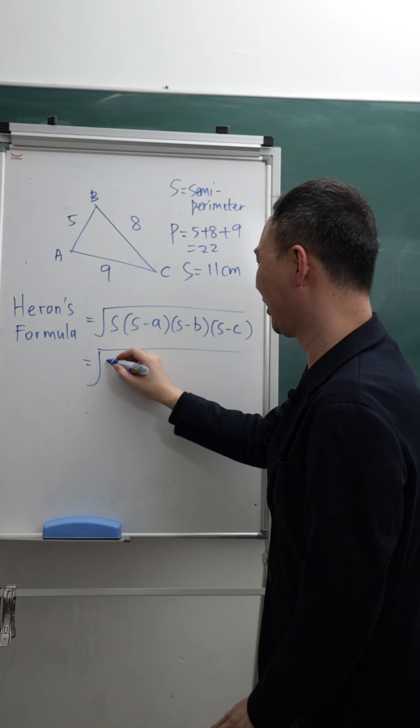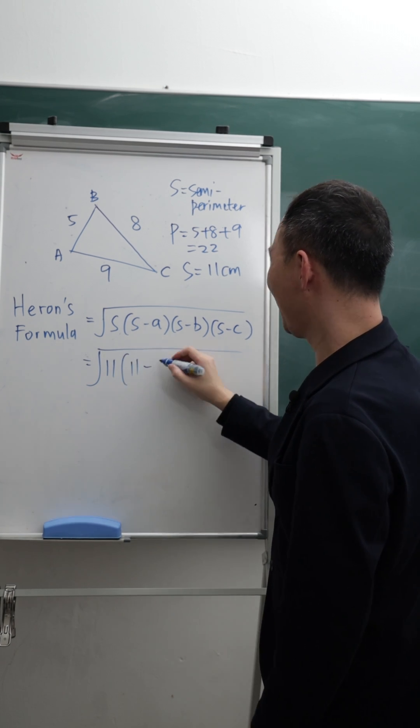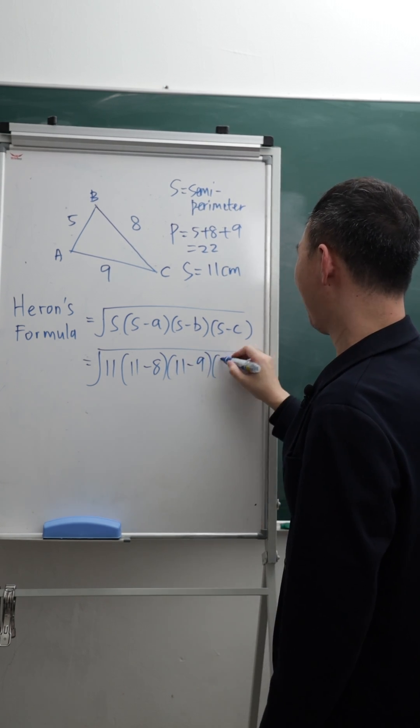Now I got the S ready, I can just apply it into this formula, it's 11. Then I can say this is 11 minus my A, and then 11 minus my B, and then 11 minus my C.